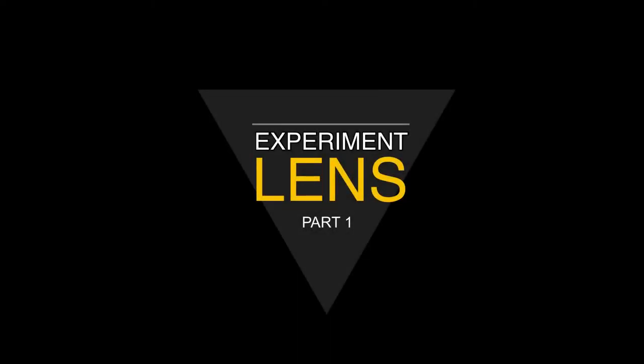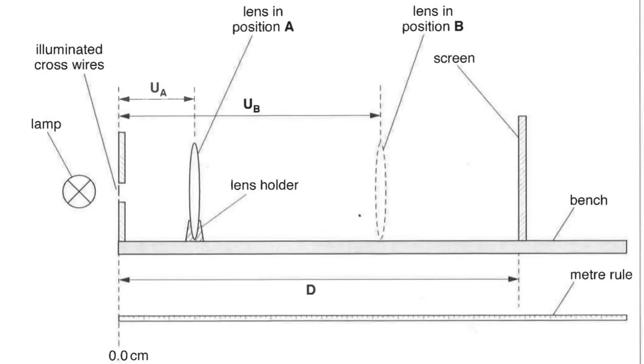In this video, we're going to talk about a typical lens practical that you can have in the lab. As you can see from the diagram, you have a lamp on the left-hand side, usually in the form of a torchlight, followed by an illuminated cross wire, then a lens, and then a screen.